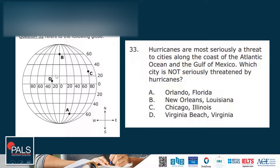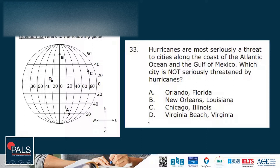This question is also related to that map, but when we read it we realize it's a trick. 'Hurricanes are most seriously a threat to cities along the coast of the Atlantic Ocean and the Gulf of Mexico. Which city is NOT seriously threatened by hurricanes?' If you miss that 'not,' you could pick any of three cities. The answer is Chicago, Illinois — it's the only one not on one of those coasts. That is factual-based knowledge and the only way to answer this question.